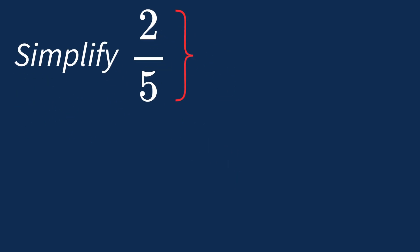To simplify 2 over 5, we begin by looking for common factors between the top number, the numerator, and the bottom number, the denominator.